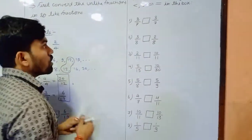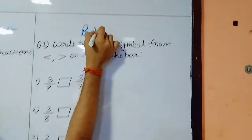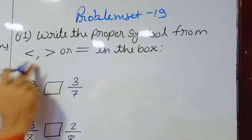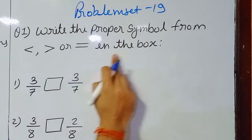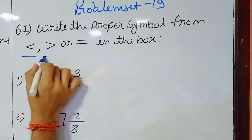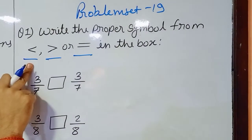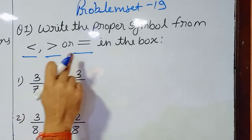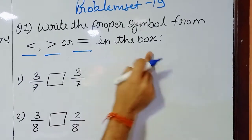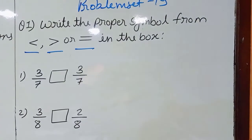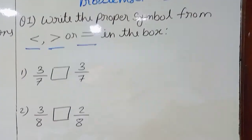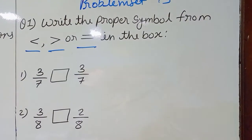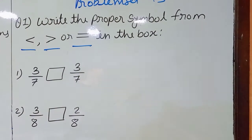Now let's see problem set number 19. Question number 1 is given: write the proper symbol in the box. Here we have three symbols — this one is the symbol for smaller, this is the symbol for greater, and this is the symbol for equal to. So we have a few fractions with a box between them, and we have to do the comparison to decide which one is greater, smaller, or if both are equal.